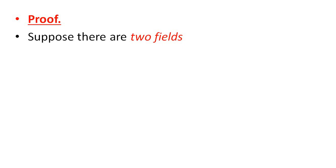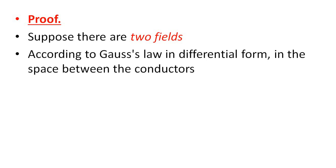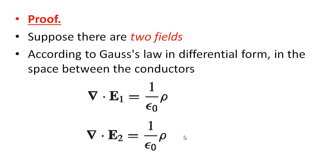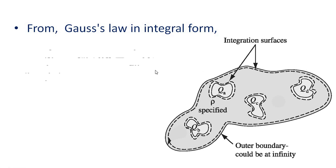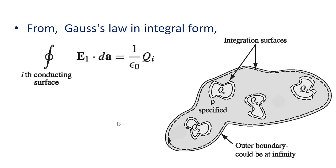Proof: suppose there are two fields — this is the false argument. Suppose there are two fields E1 and E2. According to Gauss's law in differential form, in the space between the conductors: del dot E1 equal to 1 over epsilon-zero times rho, and del dot E2 equal to 1 over epsilon-zero times rho.